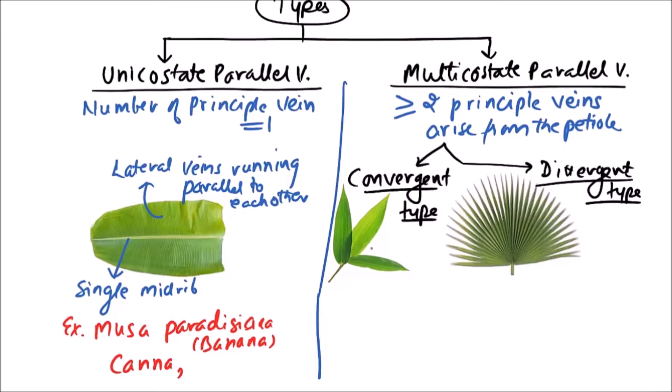We can easily observe in the convergent type that the principal veins are running parallel and finally converging to the apex. In this case, principal veins converge towards the apex.